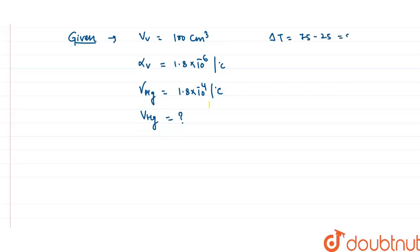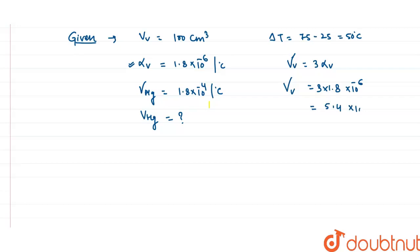Now we know that the relation between alpha and gamma can be given as: gamma_vessel equals 3 times alpha_vessel. So gamma_vessel is 3 into 1.8 into 10 to the power minus 6, which gives us 5.4 into 10 to the power minus 6 per degree centigrade.